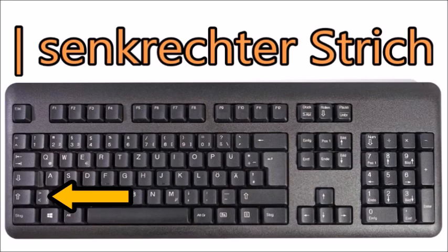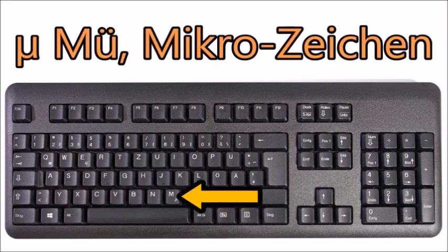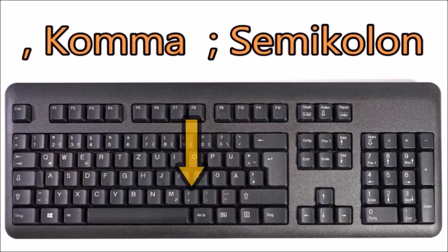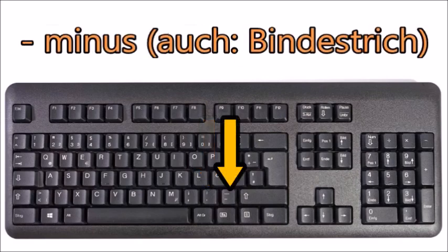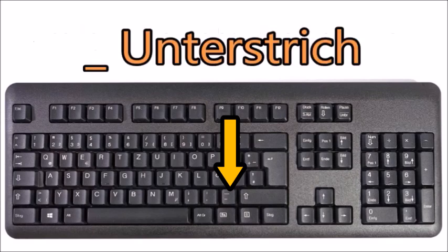Alt Gr+M produces mu, called Mu or Mikrozeichen in German. Next to M is the comma and semicolon, called Komma and Semikolon. Next to that is the period or dot and the colon — der Punkt und der Doppelpunkt. Next to that is minus and the underscore, der Unterstrich.